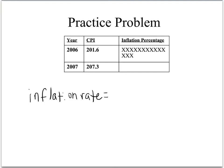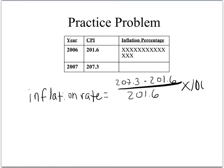Now, if we plug in the numbers to the equation, we can find how much inflation grew between 2006 and 2007. We take the newer information first, 207.3, subtract the old information, 201.6, divided by 201.6, the older information, times 100. The answer we come up with is 2.8%.